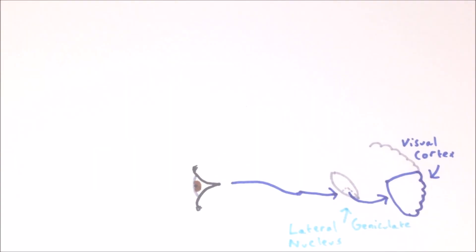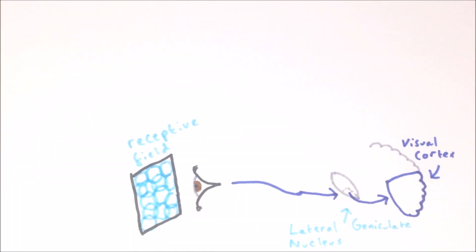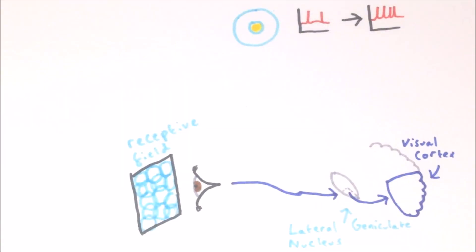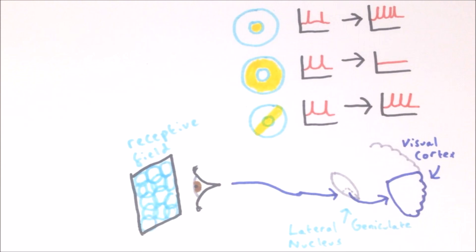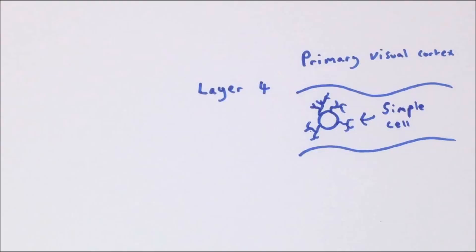Neurons in the lateral geniculate nucleus receive input from the retina. They respond to points of light in a circular area of the visual field known as their receptive field. The receptive fields of many lateral geniculate neurons cover the whole visual field with a high degree of overlap. The receptive fields have a center-surround structure: a smaller circle in the center which, if stimulated, causes the neuron to increase its firing rate, while stimulation in the surrounding circle inhibits the cell. If a bar of light stimulates the whole center and only part of the surround, the result is a net increase in firing rate. This makes lateral geniculate neurons very good at detecting edges.